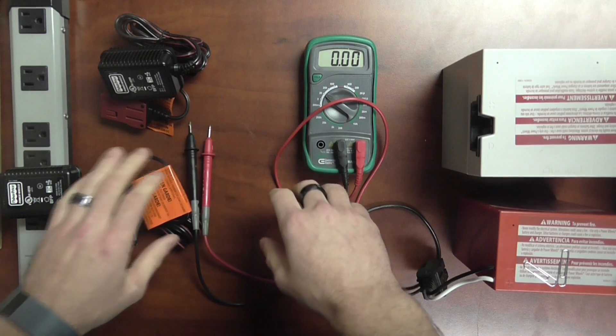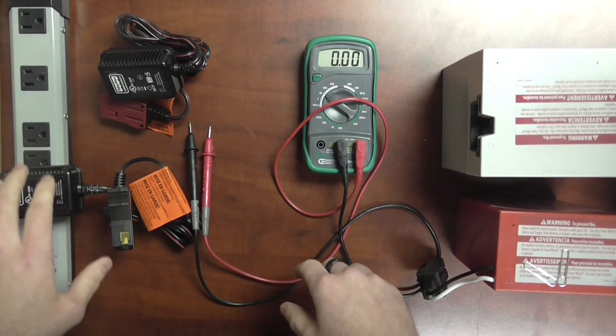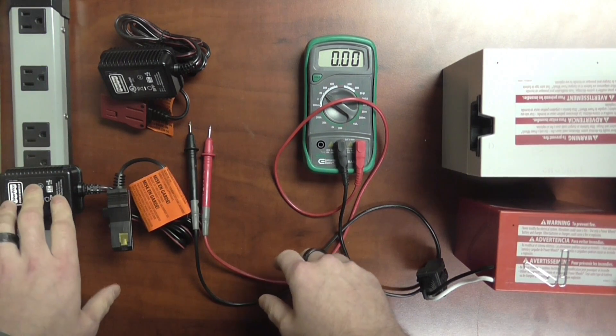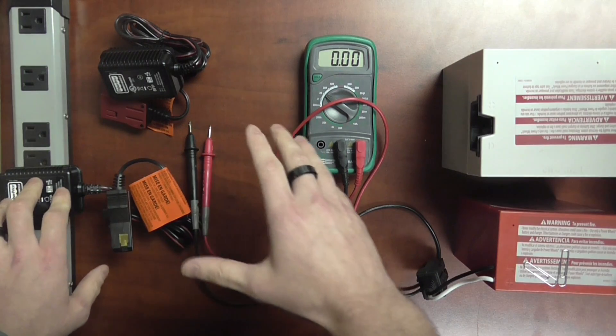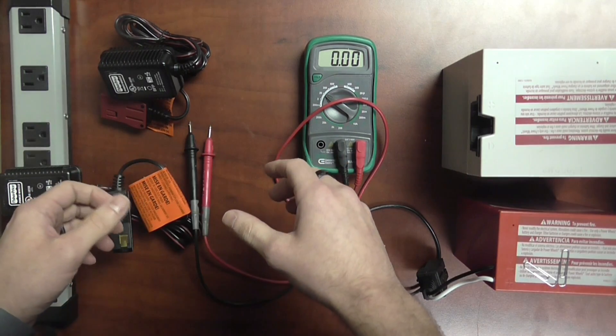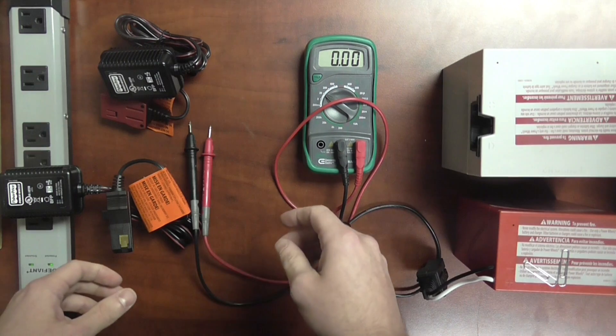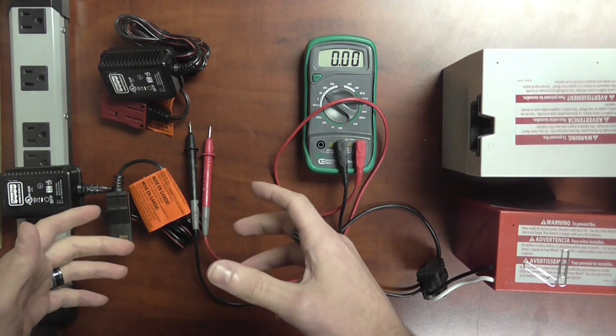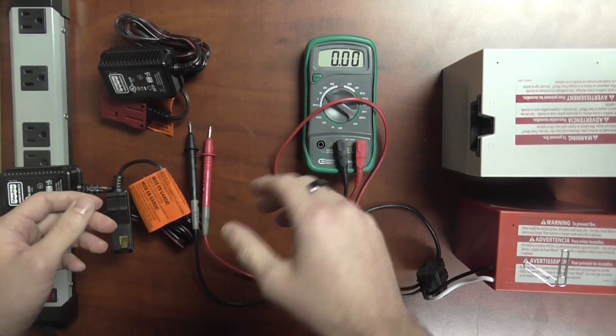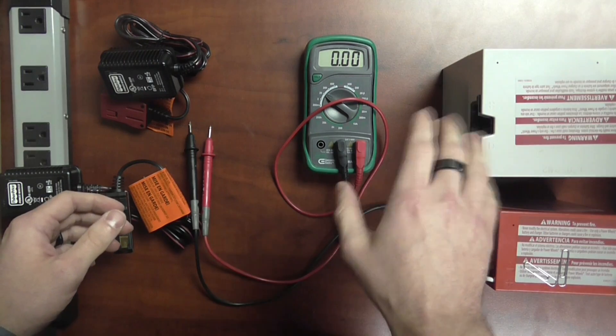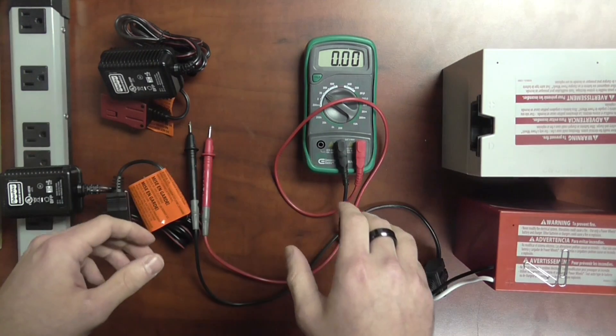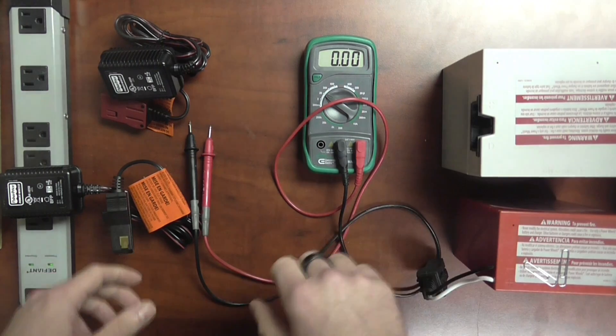So if you're getting anything really below 13 volts that's going to be considered an issue. Now the only charger that you're not going to be able to complete this test on is the Power Wheels quick charger. The reason being is that since it's a smart charger it needs to actually be plugged into the battery itself prior to putting out any voltage. So I believe we're going to make a separate video for that one.